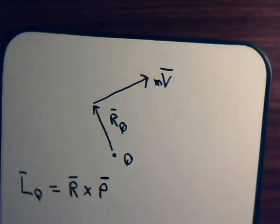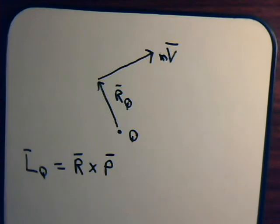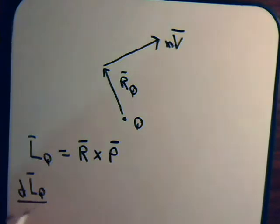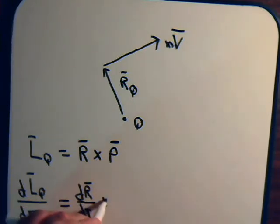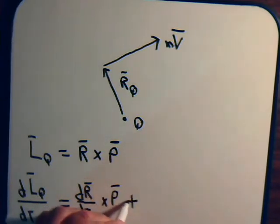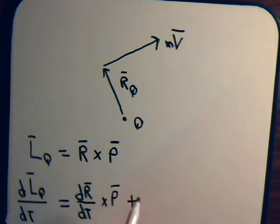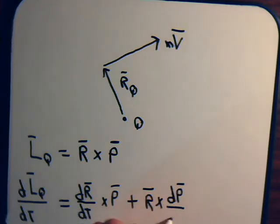Now what we did not do in the previous videos is consider what happens if we take the derivative of the angular momentum with respect to time. So let's do that right now. Here we have this cross product. So that will equal the derivative of R cross P with respect to time, plus the cross product with that derivative.